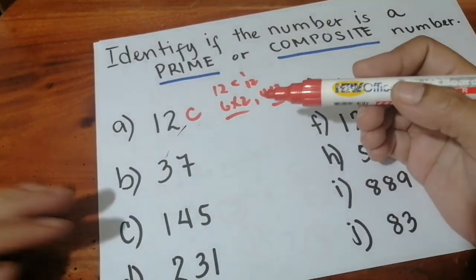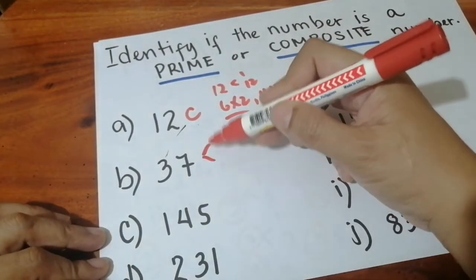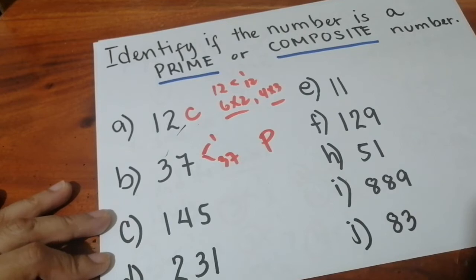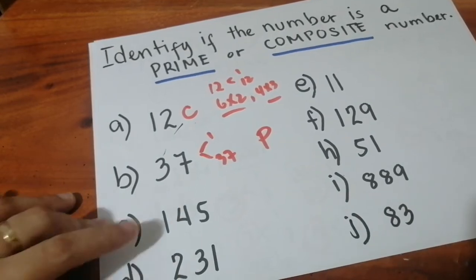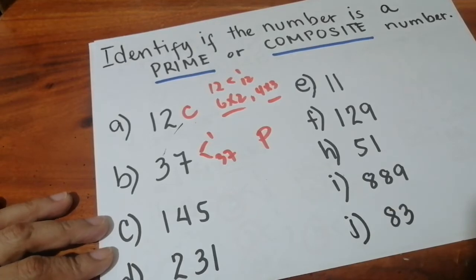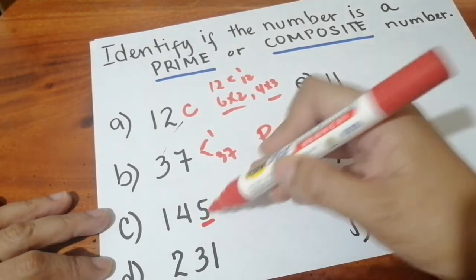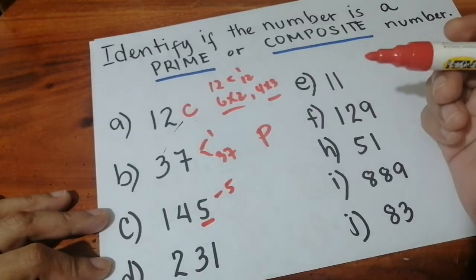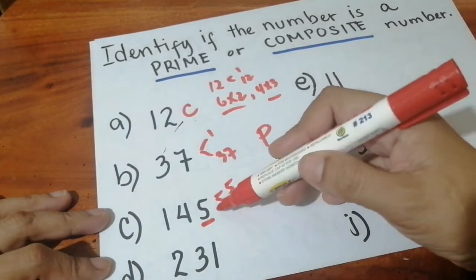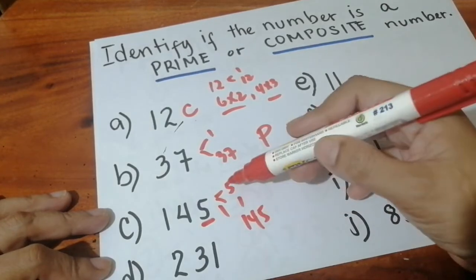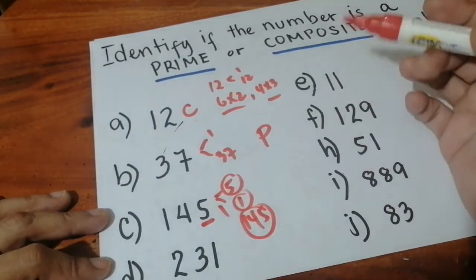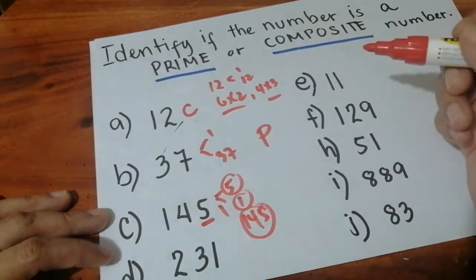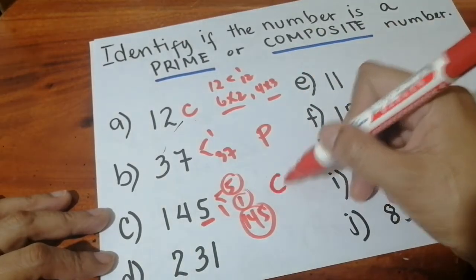Next, thirty-seven. The factors of thirty-seven are only one and thirty-seven, so thirty-seven is a prime number. Next, one hundred forty-five. Using the divisibility rule, it ends in five, so it is divisible by five. It is also divisible by one and by one hundred forty-five itself. That immediately gives it three factors, meaning one forty-five is a composite number.